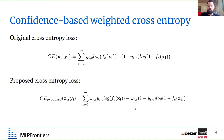These weights can be computed based on the information we have. In case we are 100% sure that this is a missing label, these weights would be set to zero and we would ignore this sample-label pair during training. Going all the way up to one if we have 100% confidence that this is a true label, this would be a normal original cross-entropy loss for this sample-label pair.